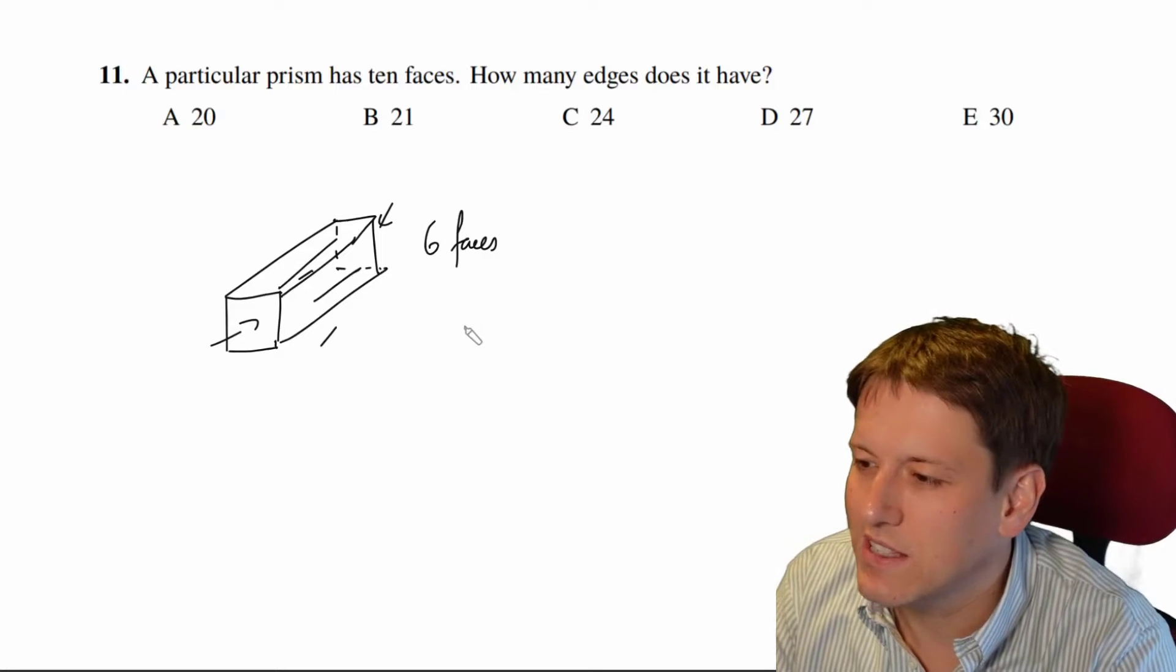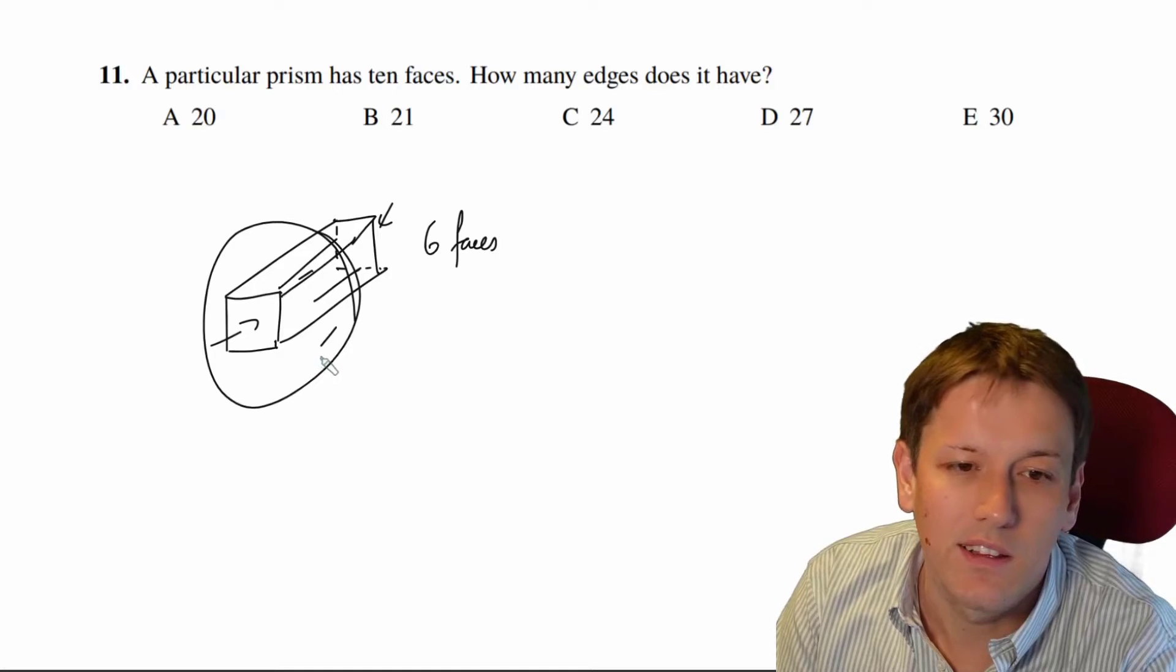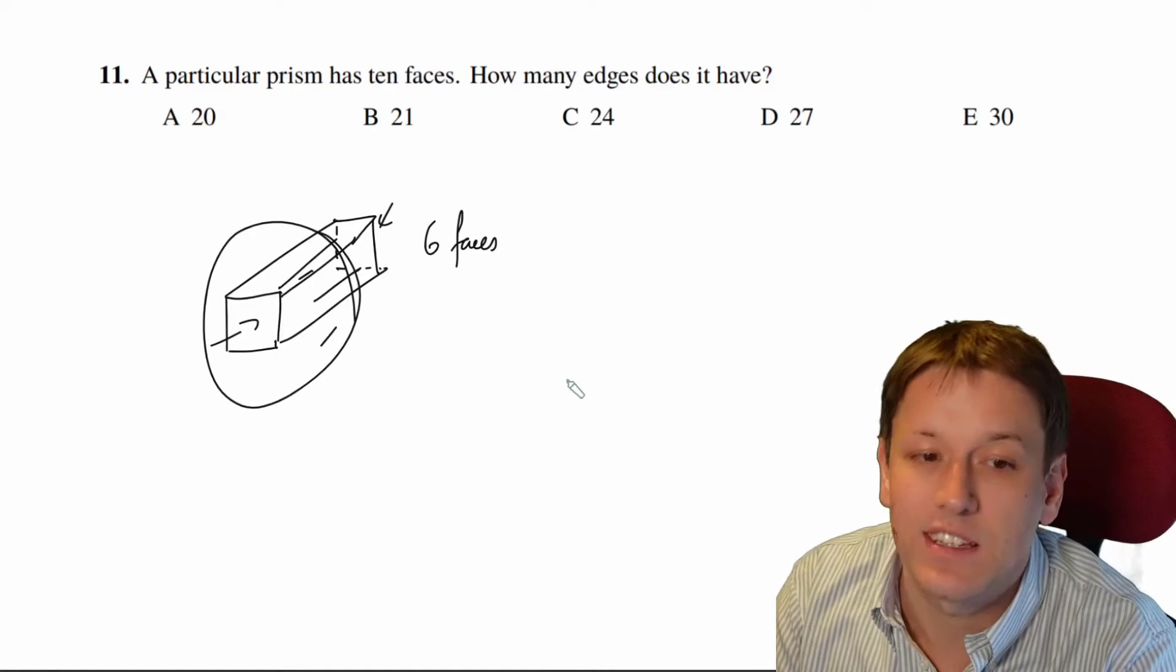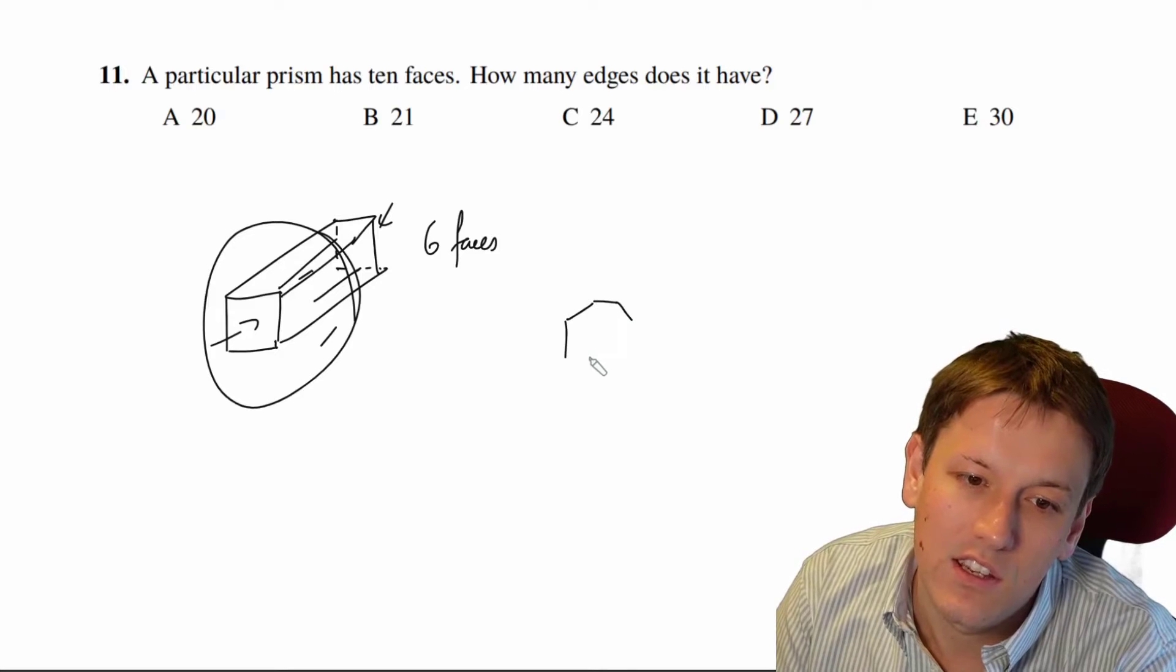Now if I want 10 faces I'm stuck with the two ends and I've just got to make sure then that whatever is in the middle accounts for the extra eight faces. So if I want eight more I'm going to have to start with an eight-sided shape on the end of my prism.